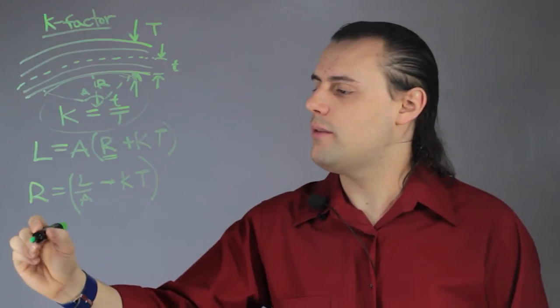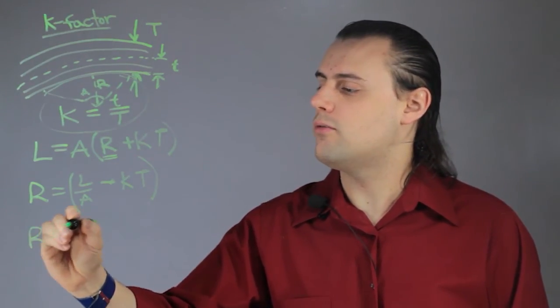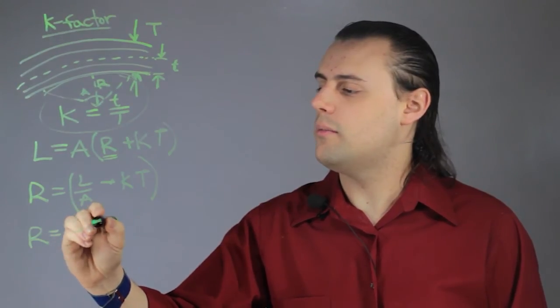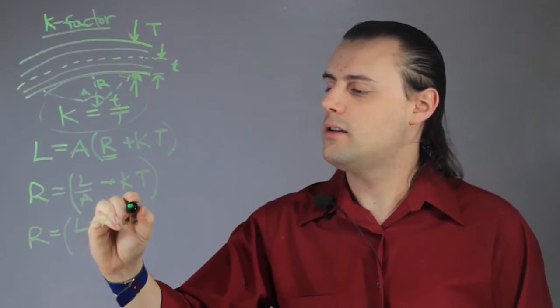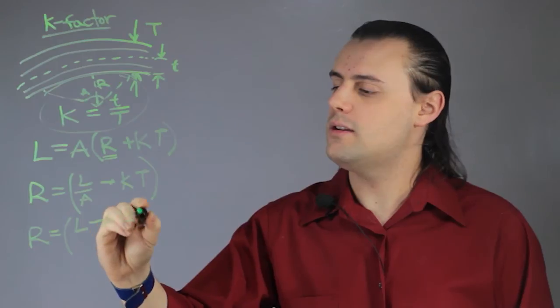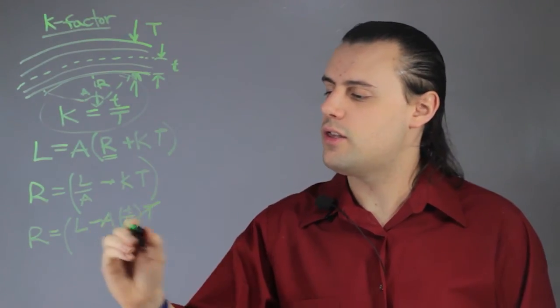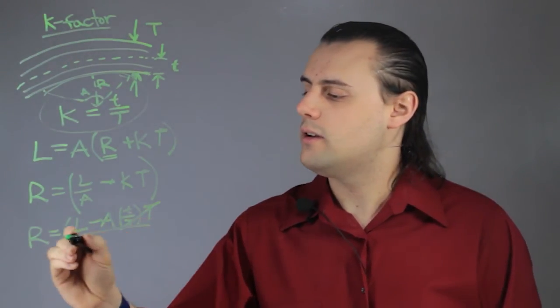then we end up with R equals L minus A times little t over big T times big T, so the thickness cancels out, all over A.